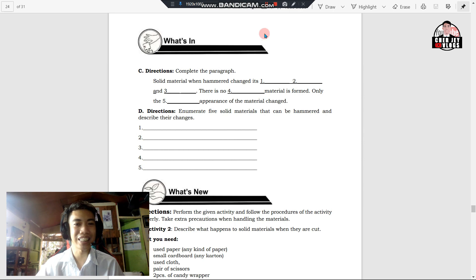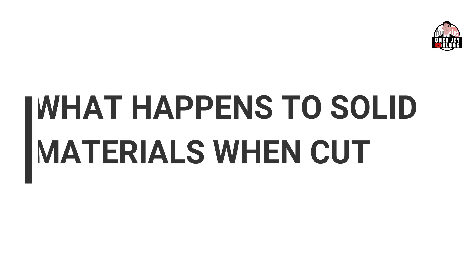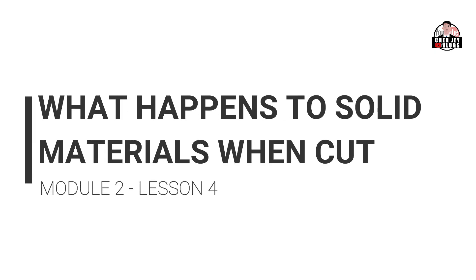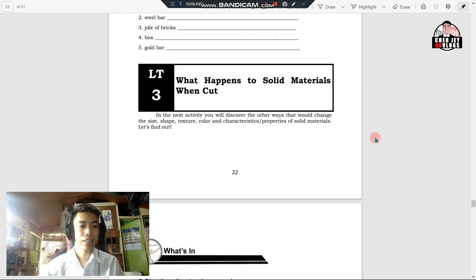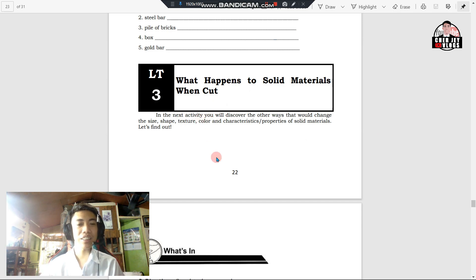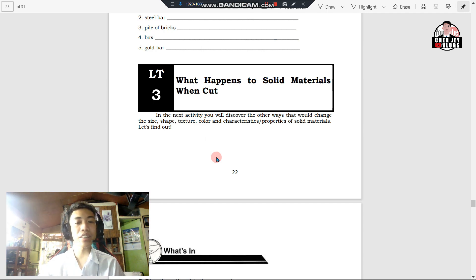And that ends our Lesson 3. Now let us discuss Lesson 4. Lesson 4 is about what happens to solid materials when cut. In this lesson, we're going to discover other ways that would change the size, shape, texture, color, and characteristics or properties of solid materials.